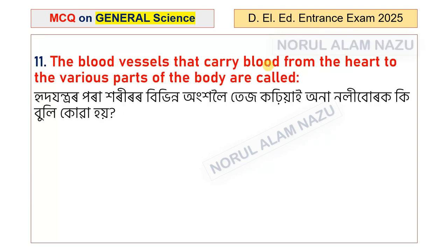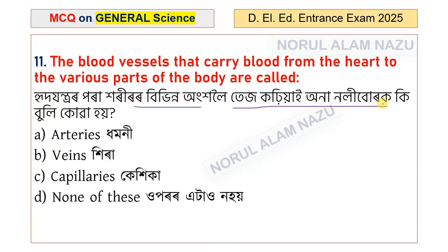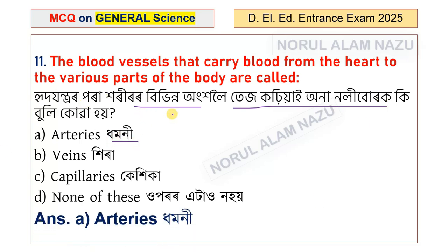The blood vessels that carry blood from the heart to various parts of the body are called — the options are arteries, veins, capillaries, and nadis. The answer is arteries.